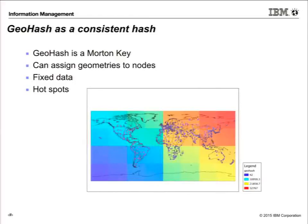A geohash is a consistent hash as well — it's just a Morton key, or Morton value. It's a way of assigning geometry to different nodes. If my data is static, not moving in time — so I'm not an aircraft or a UAV — why not use a geohash? That means, according to the geometry of a document coming in, I can send it to a particular node in my cluster. That could be a data privacy issue — I could want to keep all the data in North America or keep all European data in Europe. Or I could design my spatial index to have hotspots, which can actually make the R-tree more efficient.